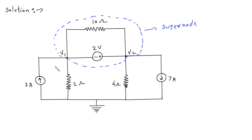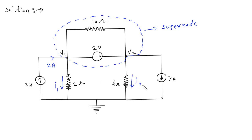Let us say this current is entering here as 2A, this current is I1, this current is I2, and this current is 7A.